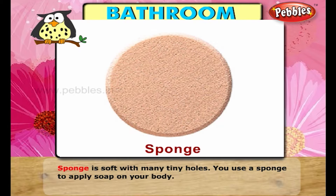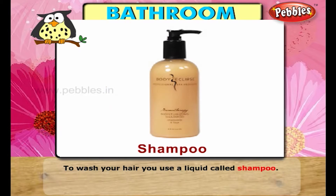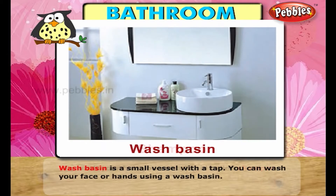Sponge is soft with many tiny holes. You use a sponge to apply soap on your body. To wash your hair, you use a liquid called shampoo.